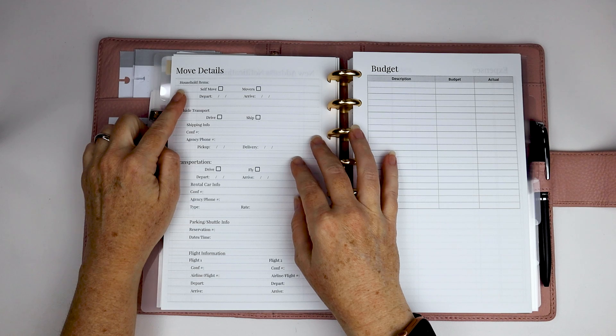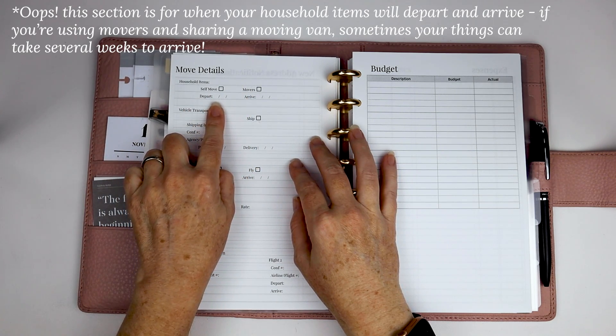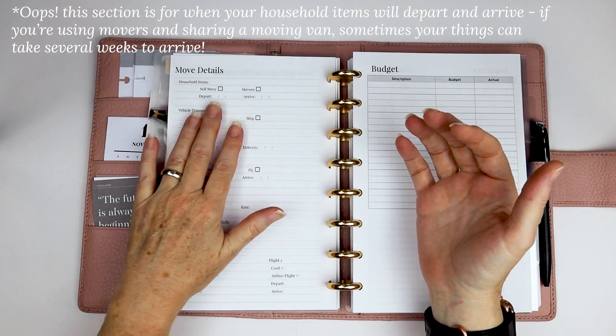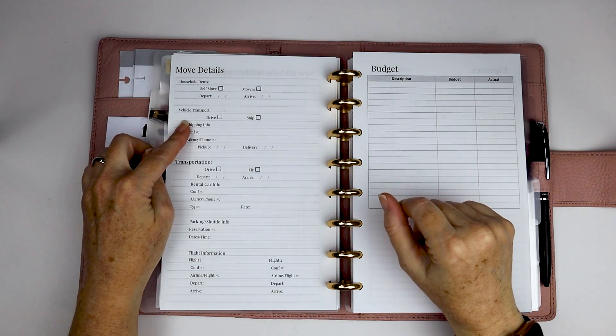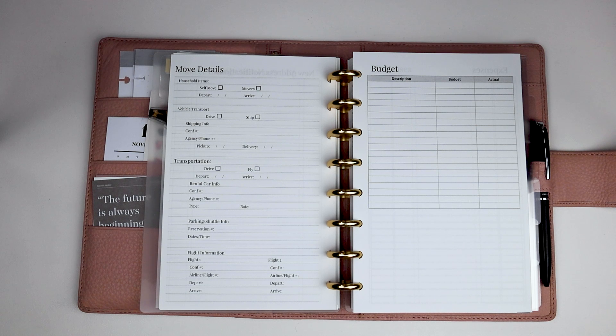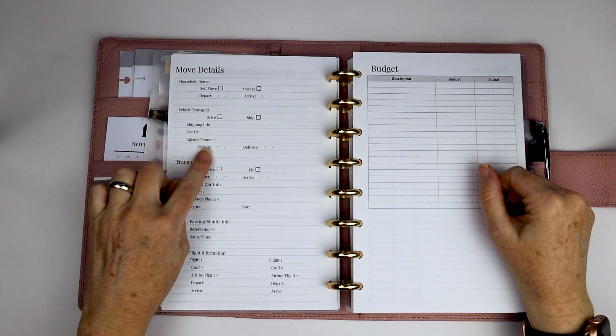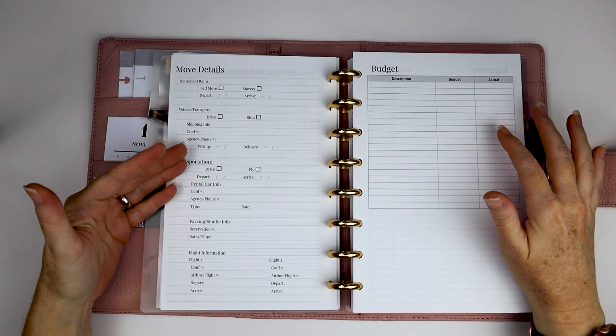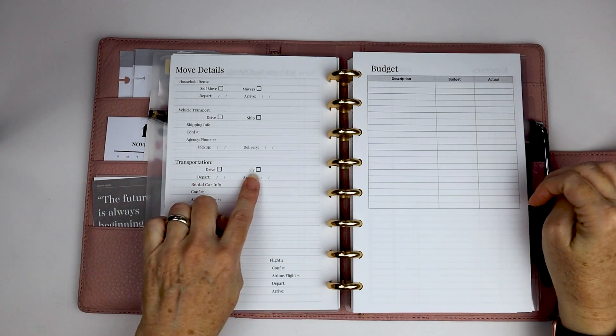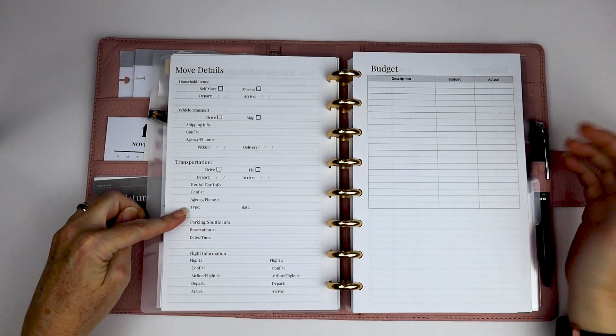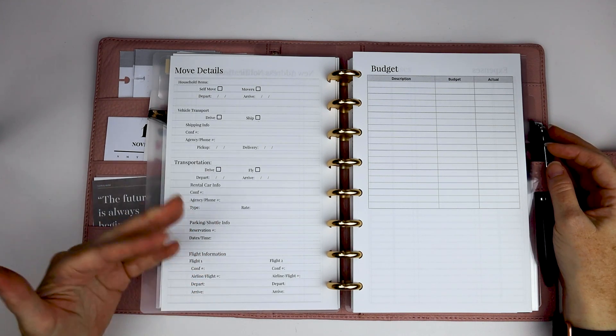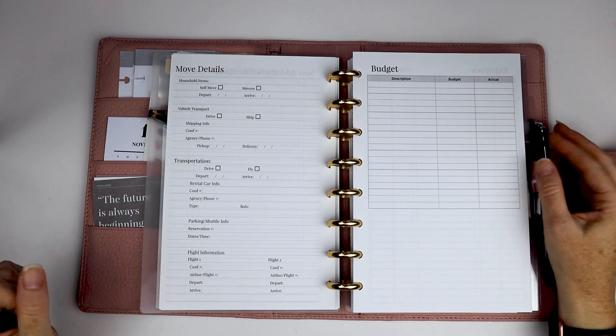If you've seen my travel inserts, this probably looks very familiar. But for me, this is kind of a summary page. So when I'm getting ready to move, I have everything in one place. So how are your household items being moved? Are you moving yourself or are the movers taking it for you? When you plan to depart, when you plan to arrive. So if you're traveling, you know, across several states, you have a place to make a note of how long that trip will be. How you're taking your vehicles. If you're traveling across country or maybe internationally, you may want to ship your car or you might be driving it. There's a spot for shipping information, confirmation number, agency phone number, pickup delivery. And then transportation. So your belongings have now been taken care of. How are you getting wherever you're going? So you've just a spot for drive versus fly. Depart, arrive. If you're having to rent a car for some reason, there's a spot for that. If you're needing to take a parking, take a shuttle to the airport or if you need parking information, there's a place for that. And then a spot for your flight information.